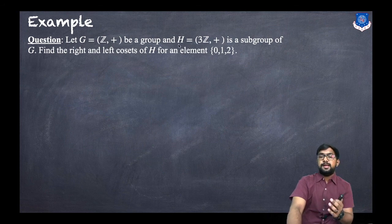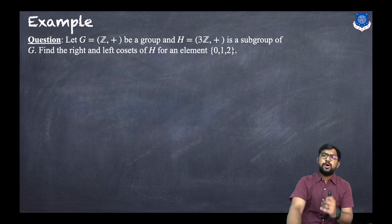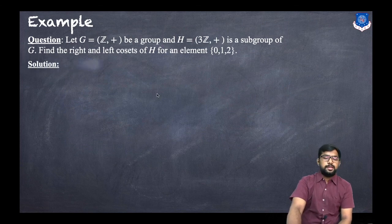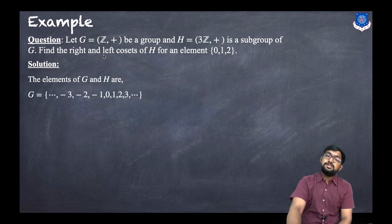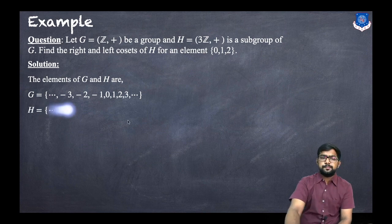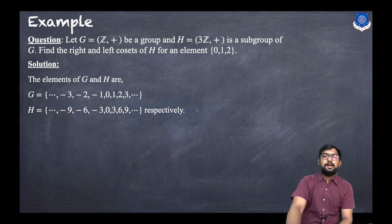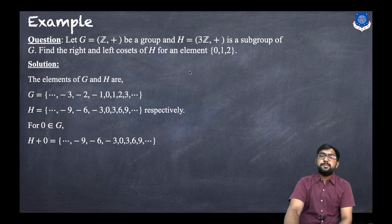Let us discuss another example. Let G = (Z, +) be a group and H = 3Z be a subgroup of G. Find the left and right cosets of H for elements 0, 1, and 2. The elements of G are all integers: 0, 1, 2, 3, -1, -2, -3, and so on. The elements of H are multiples of 3: 0, 3, 6, 9, -3, -6, -9, and so on.